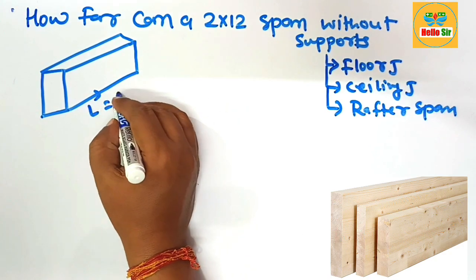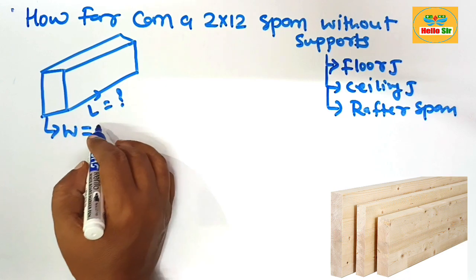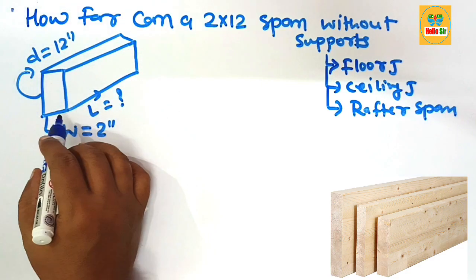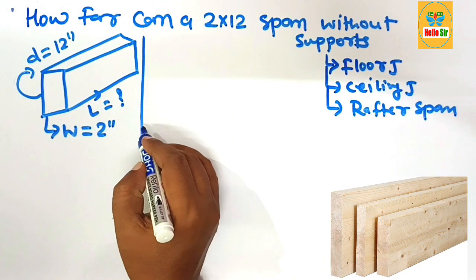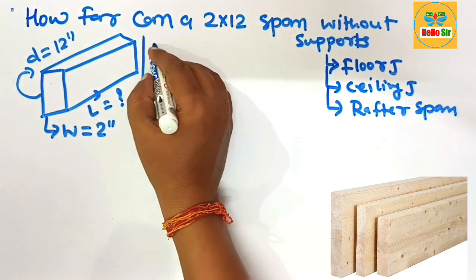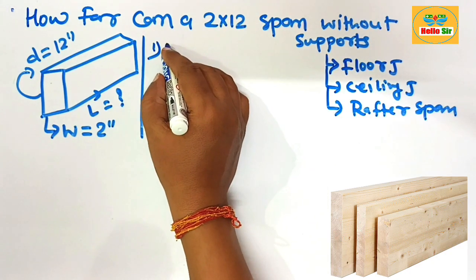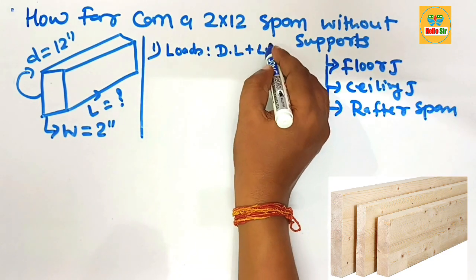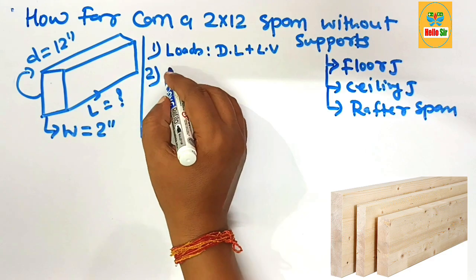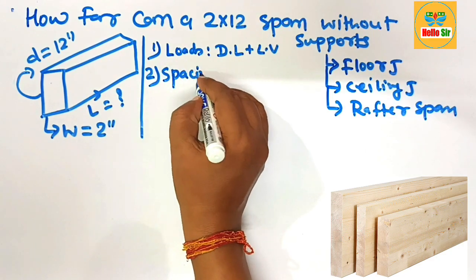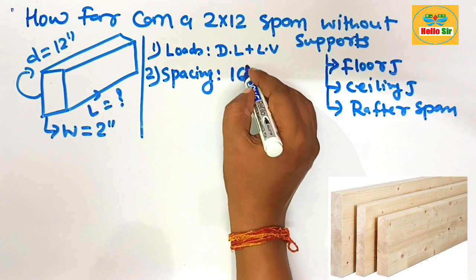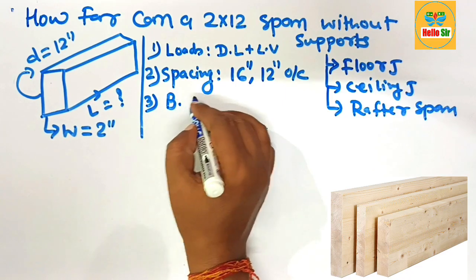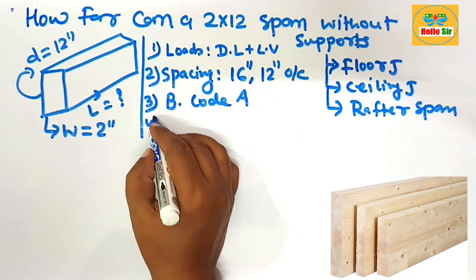This is the span length you have to figure out. This is the width section that is 2 inches and this is the depth section that is 12 inches — this is the dimension for a 2x12 lumber. The factors that decide the span length are: first, the load, which consists of dead load and live load; second, the spacing between the joists, which should be 16 inches or 12 inches on center; third, the building code in your area.